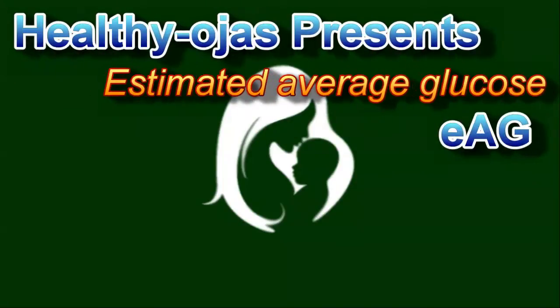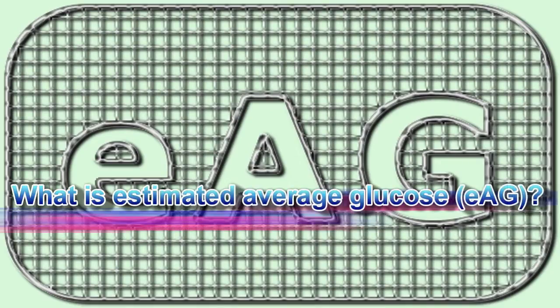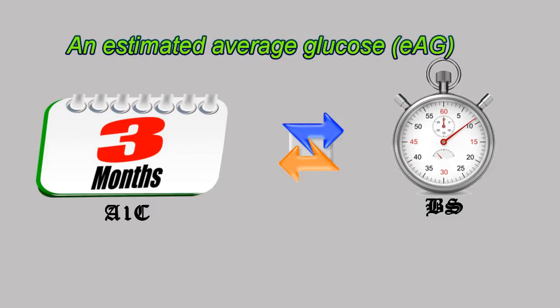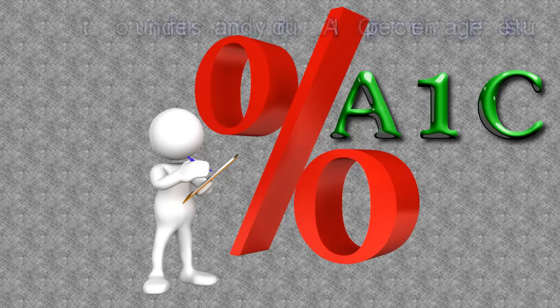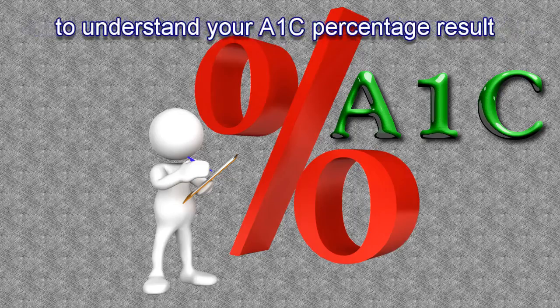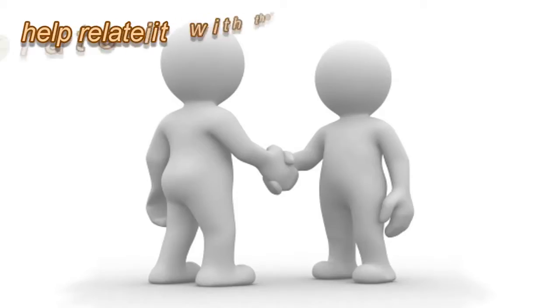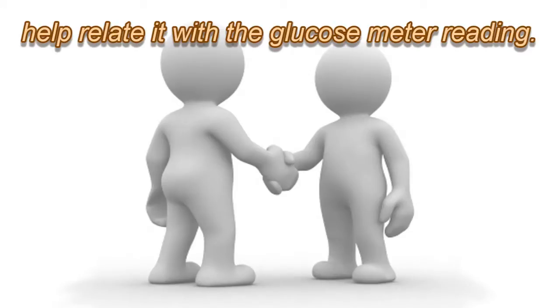Healthy OGS presents this video on estimated average glucose. Estimated average glucose (EAG) is an easy way to understand your A1c percentage result and help relate it with the glucose meter reading.